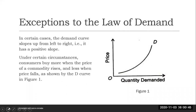However, we have instances where the demand curve slopes upward from left to right, and it has a positive slope. Under the circumstances, the consumer will buy more when the price of the commodity is rising, and less as its price falls, as shown by the demand curve B in our figure one. You observe that as price goes up — price as usual is on our y-axis and quantity demanded is on our x-axis — we end up with more quantities being demanded, which is against the law of demand, and such situations we will refer to as exemptions to the law of demand.